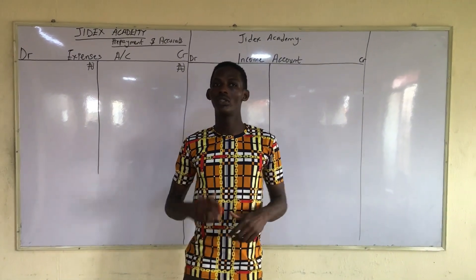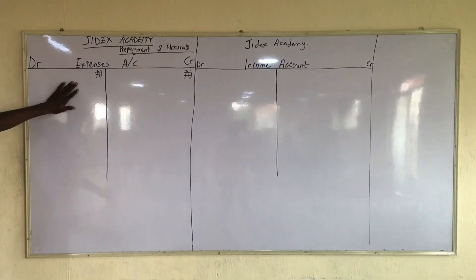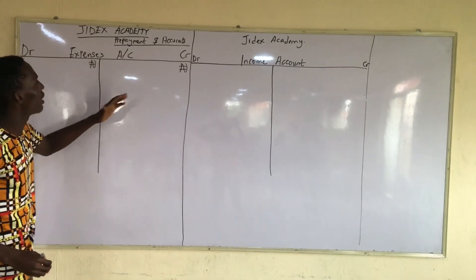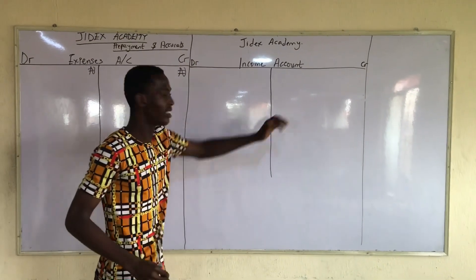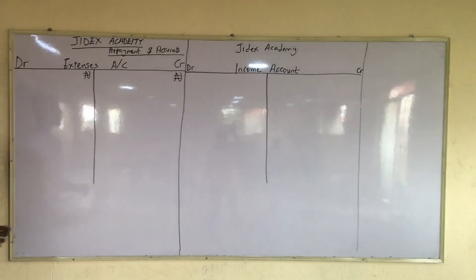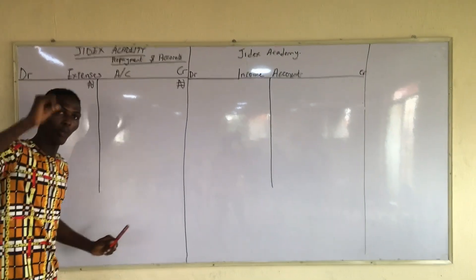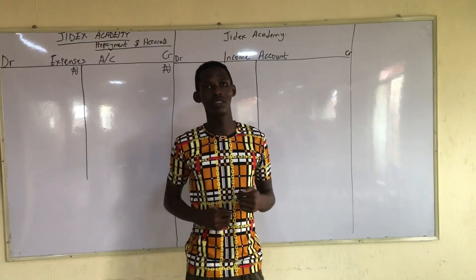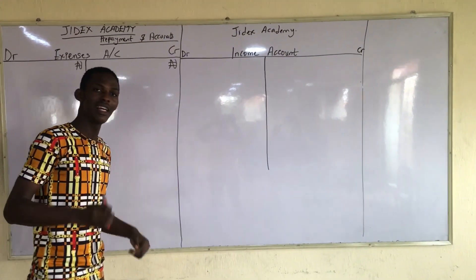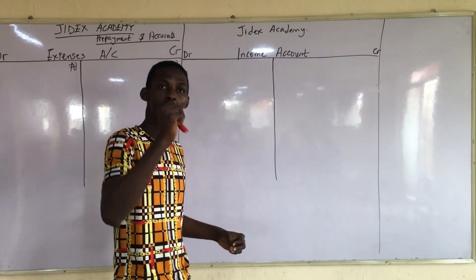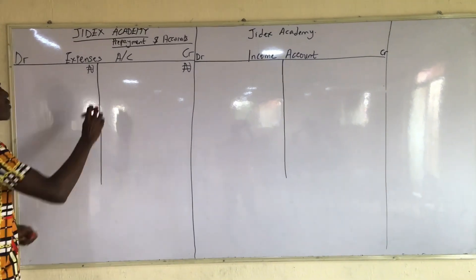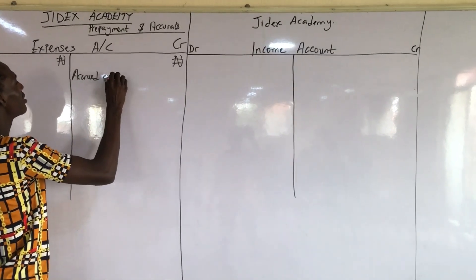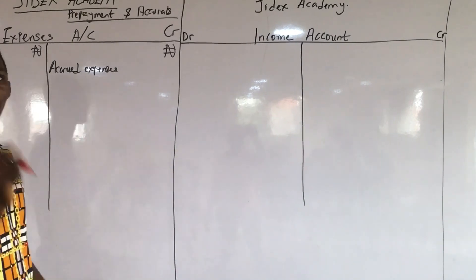We are going to start with the expenses account to help us understand. Accrued expenses — as I discussed in our previous videos — means owing or outstanding. It is a liability, and therefore accrued expenses only have a credit balance because it is a liability.